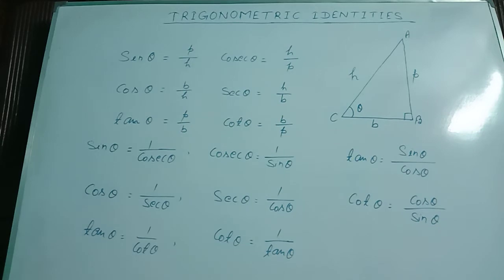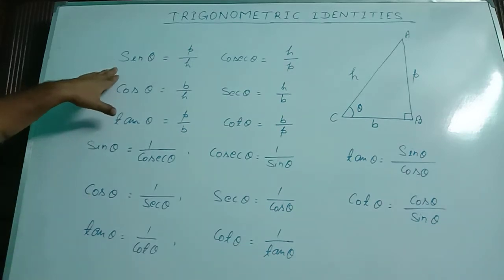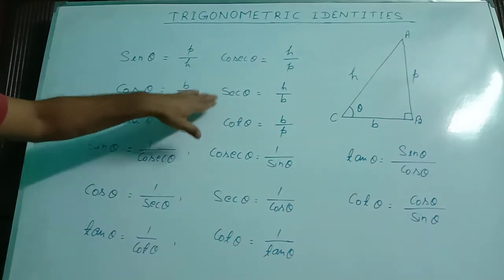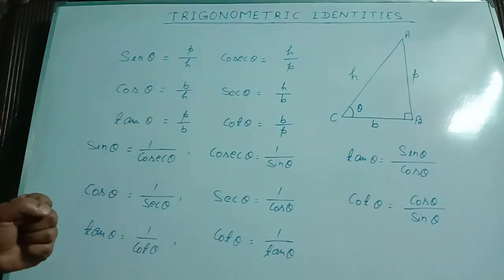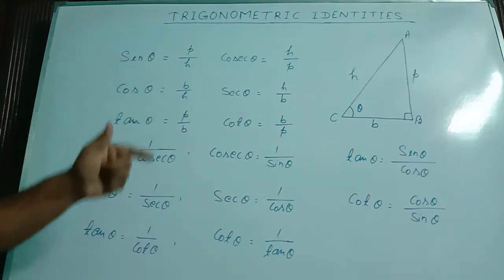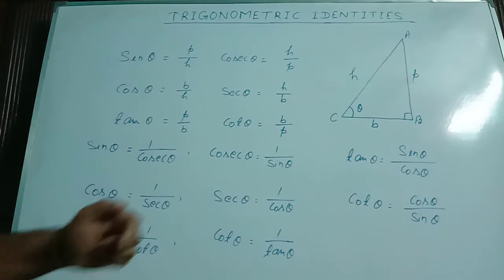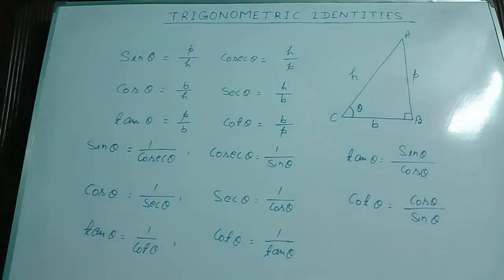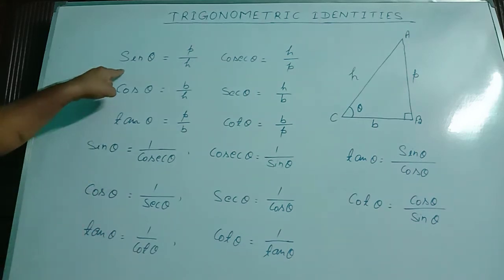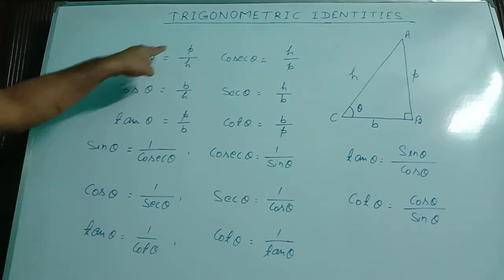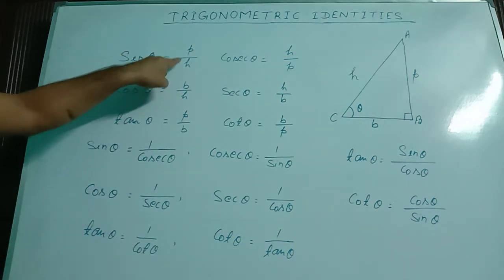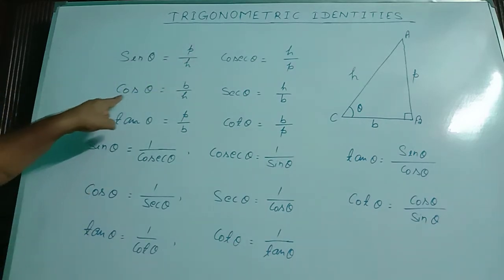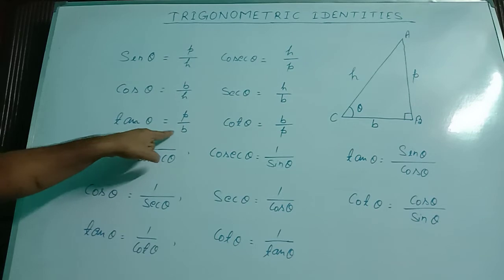Trigonometric identities are: sin theta, cos theta, tan theta, cosec theta, sec theta, and cot theta. Through these identities, the ratios of different sides are represented, such as sin theta equal to P by H — this is the ratio of perpendicular to hypotenuse. Cos theta equal to B by H, and tan theta equal to P by B.